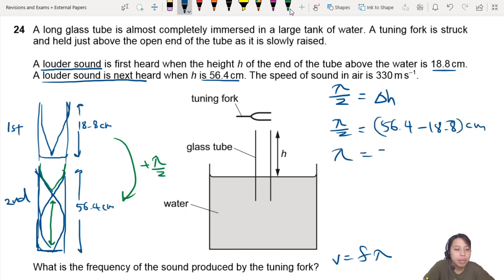By the way. So this lambda will be 75.2 cm. Very nice. So now we know lambda, we can calculate the velocity.